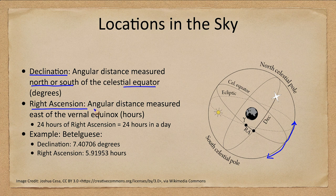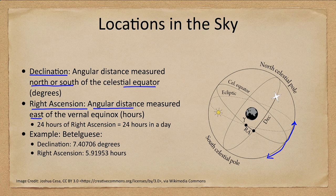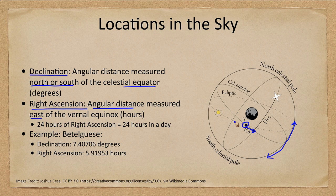Right ascension is an angular distance measured east — note that this differs from longitude, where we measure both east and west. In the sky, we measure only eastward, all the way around. Right ascension is also not measured in degrees like longitude or declination; it is measured in hours, with 24 hours in one full circle. The right ascension of a point tells you how far east you are from the vernal equinox, which is where the ecliptic — the path of the sun — crosses the celestial equator heading north.